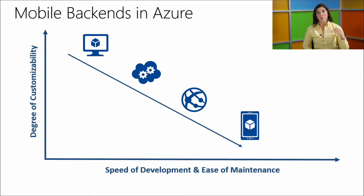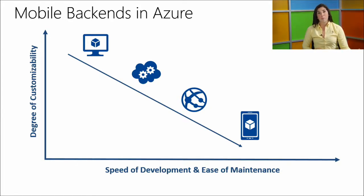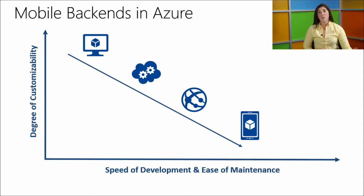You're going from extremely customizable — everything from which OS patch to accept in virtual machines — all the way down to mobile services, which gives you really rapid development time and makes maintaining your application a lot easier. The team handles not just features like authentication and data storage in a scripting environment, but also any patching and maintenance, such as keeping Facebook authentication working when their protocols update.